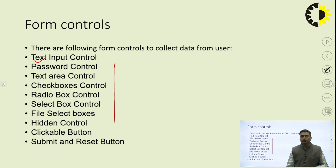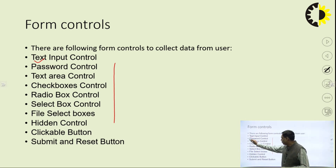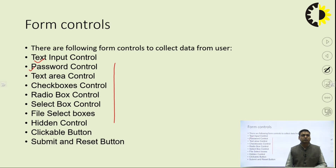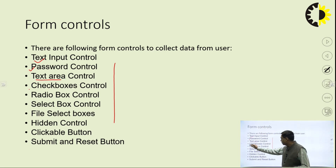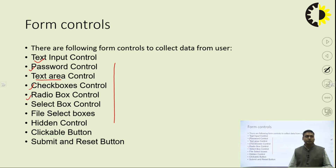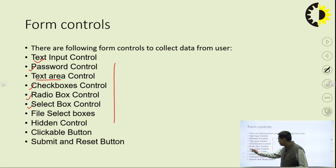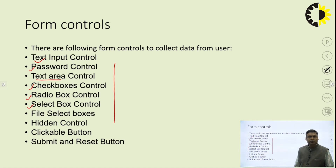To get a password from the user, we can use a password control. If you need more information from the user, we can use the text area. To display a checkbox, we can use the checkbox button, and a radio button to get information in an optional way — the user can select one of the options. Then we have a select box to give multiple options, from which the user selects one.